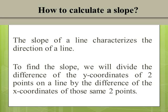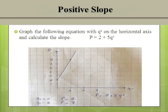Today in our session we are going to see the difference between positive slope and negative slope. In order to find and calculate the slope, we divide the difference in the y-coordinates over the x-coordinates of two points. That means slope equals delta y over delta x.